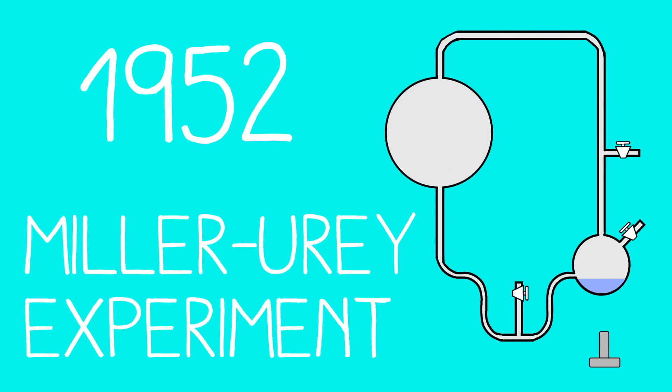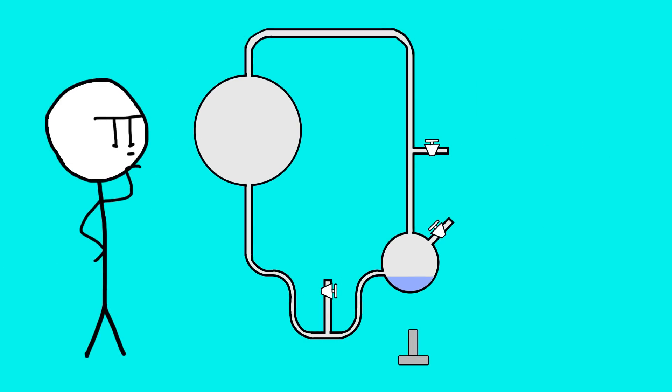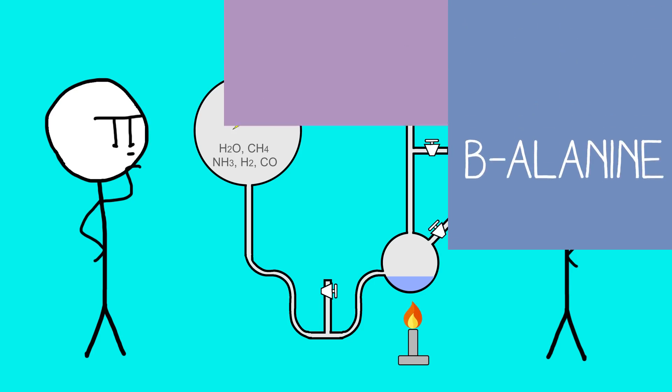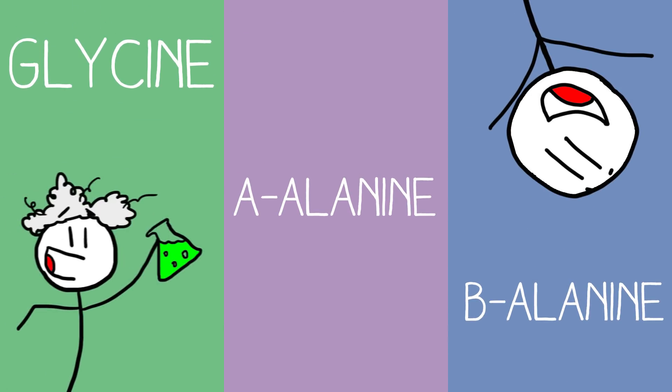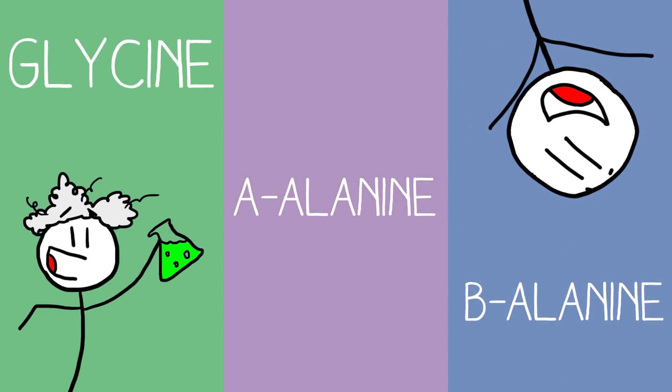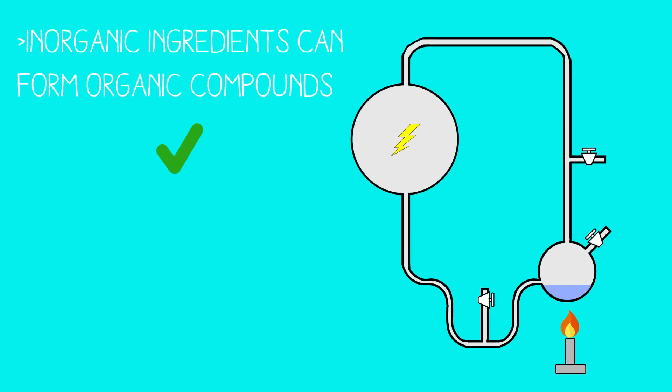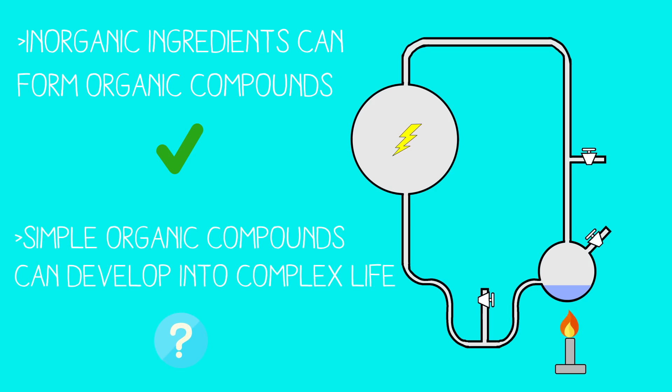Probably the most important evidence for the primordial soup theory is the famous 1952 Miller-Urey experiment. In this experiment, grad student Stanley Miller and Professor Harold Urey simulated early Earth conditions in the lab and tested the chemical origin of life under these conditions. Sure enough, the two men found that amino acids could indeed form from inorganic precursors. Since 1952, there have been many similar studies, confirming at least the first half of the primordial soup hypothesis. The debate now is whether these simple building blocks could have gone on to form early life.